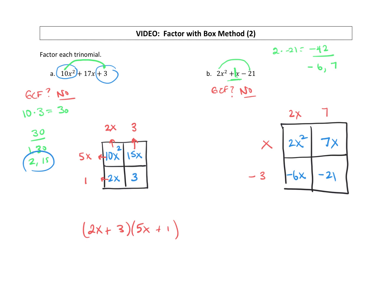Now we can put our binomial factors together. One of them will be 2x plus 7 because that was a positive 7, and then x minus 3.